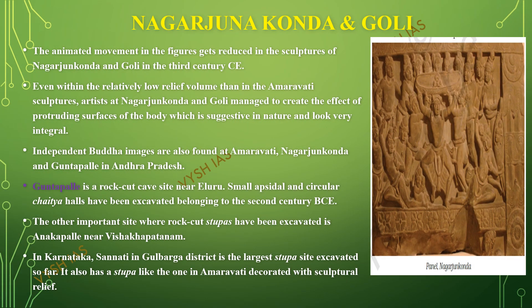Now let's see about the stupas at Nagarjunakonda and Koli. The animated movement gets reduced in the sculptures of Nagarjunakonda and Koli, around the third century CE. Even within the relatively low relief volume compared to Amaravati sculptures, artists at Nagarjunakonda and Koli managed to create the effect of protruding surfaces of the body, which are suggestive in nature and look very integral.